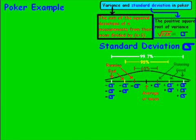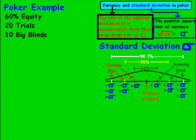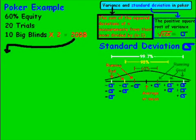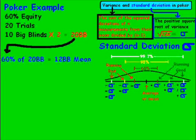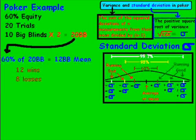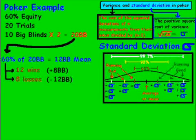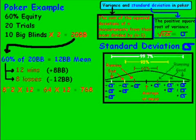I'm going to walk through an example. To keep it simple, we have 60% equity, 20 trials, and 10 big blinds each. The average pot is 20 big blinds because we contribute 10 and our opponent contributes 10. 60% of 20 big blinds gives us a 12 big blind mean. We're assuming no rake, so that translates to 12 wins and 8 losses on average. The 12 times we win, we are plus 8 big blinds from the mean; the 8 times we lose, we are minus 12 big blinds from the mean.